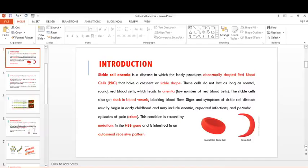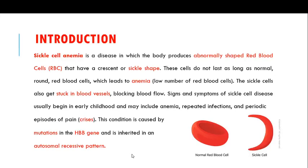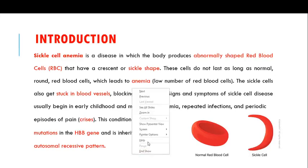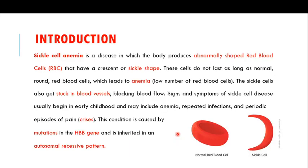Welcome back to this next video, the second in the series on sickle cell anemia. In the previous video, I told you that sickle cell anemia is a disease in which the body produces abnormally shaped red blood cells that have a crescent or sickle shape. The sickle cell anemia is caused by a mutation in the HBB gene and is inherited in an autosomal recessive pattern.